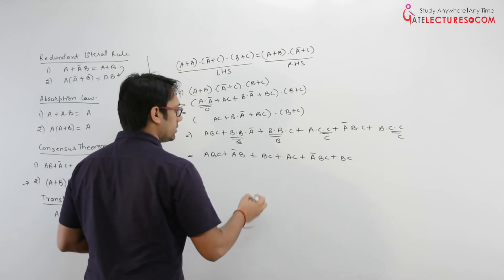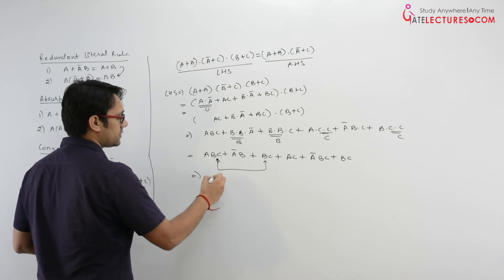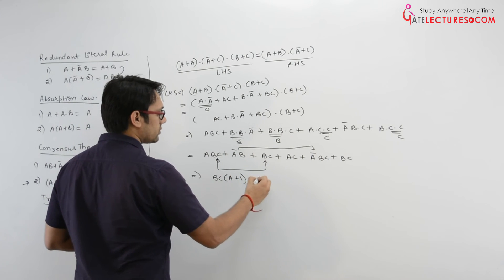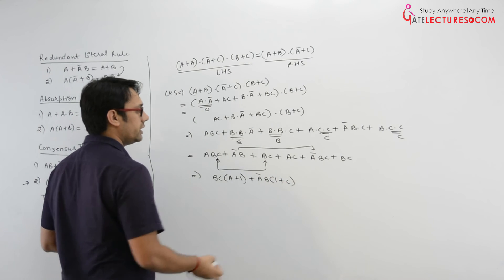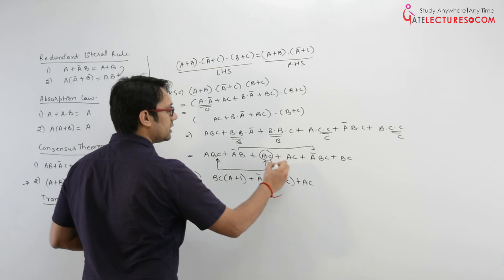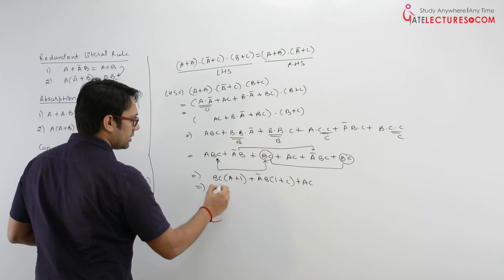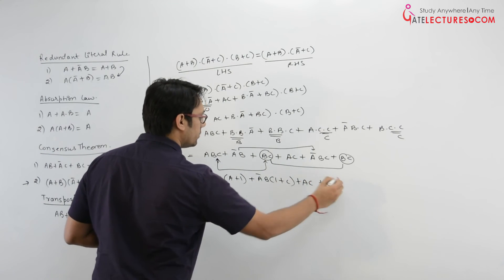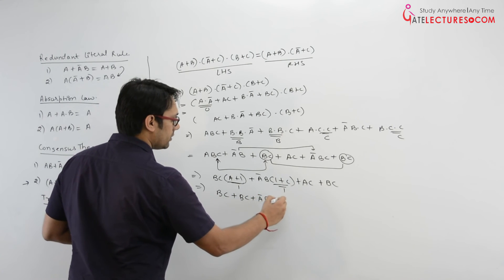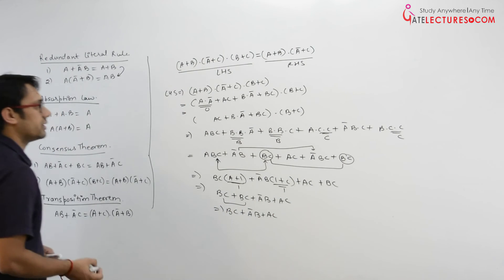Expanding further gives ABC plus A complement B plus BC plus AC plus A complement BC plus BC. Taking BC as common from applicable terms gives BC times A plus 1, and A complement B times 1 plus C, plus AC. Since A plus 1 and 1 plus C both equal 1, and duplicate BC terms collapse, we get BC plus A complement B plus AC.